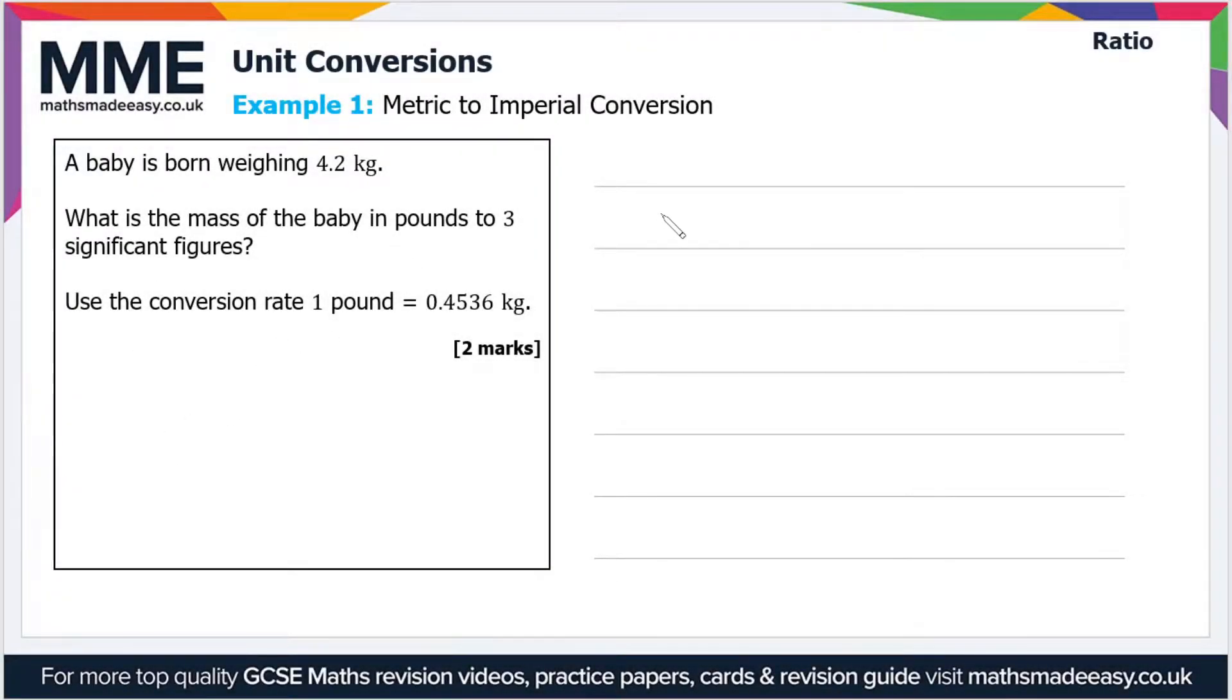Welcome to the Maths Made Easy tutorial on unit conversions. In this video we'll look at a couple of example questions, starting with a metric to imperial unit conversion. A baby is born weighing 4.2 kilograms. What is the mass of the baby in pounds to three significant figures?